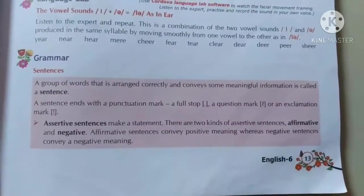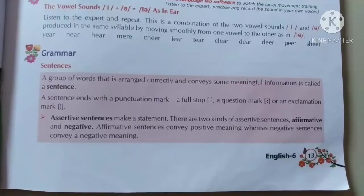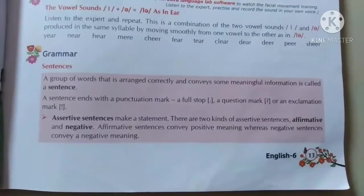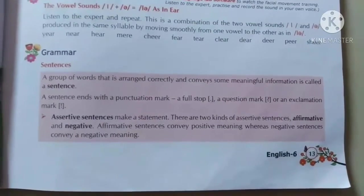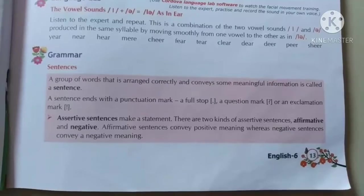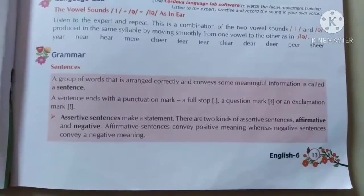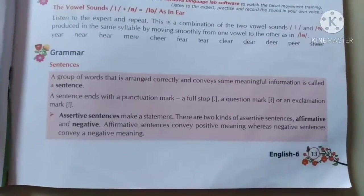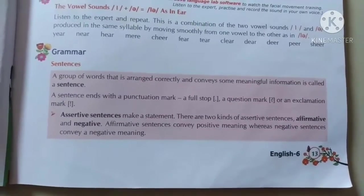There are two kinds of assertive sentences: affirmative and negative. Affirmative sentence matlab usko positive sentence bola jata hai. Negative matlab jisme 'no' ya 'not' aata hai, usko negative sentences bola jata hai.